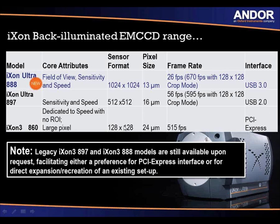Depending on your application, you have a choice of three different EMCCD sensors — all frame-transfer and all back-illuminated with high quantum efficiency. If you are interested in field of view, sensitivity, and speed, you have the 888. For sensitivity and speed, you have the 897. And for large pixels, you have the 860. So there's a choice of different sensors depending on your application.